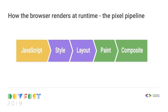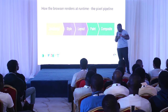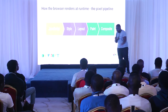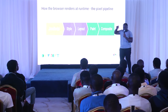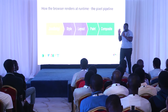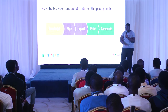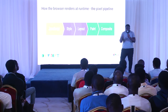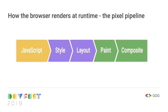To understand how to optimize applications at runtime, we need to understand what happens at runtime. Runtime is when the user is using the application — typing in a search box, filling in a registration form. When you click an input box and it gets a blue border, that's changing the style of the page. This brings us to what we call the pixel pipeline.